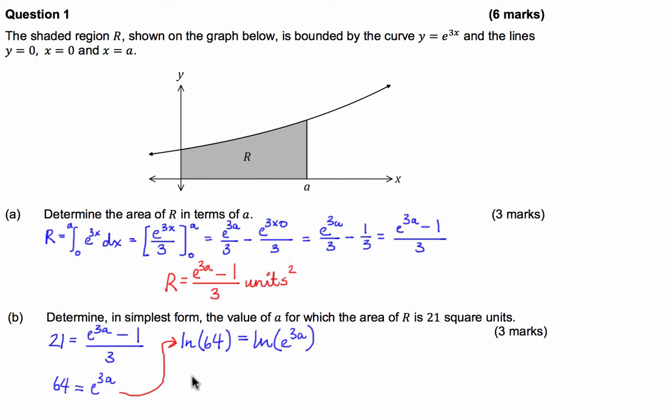Now what I'm going to do is, I know that 64 is 2 to the power of 6, so I can say that this is going to be ln of 2 to the power of 6 is equal to ln of e to the 3a. Now I'm going to use the log law, where we have ln of a to the n is going to be equal to n times the natural log of a.